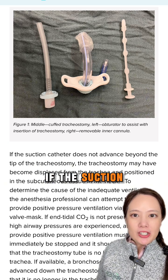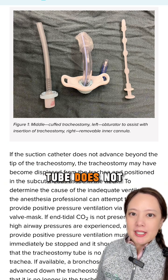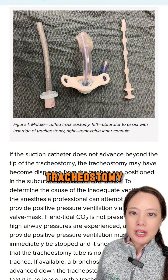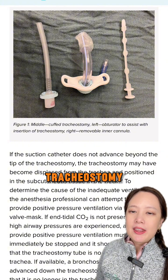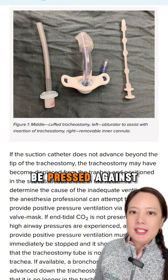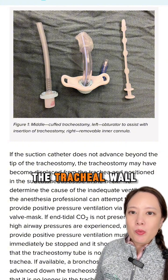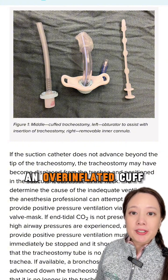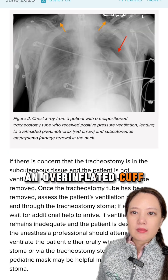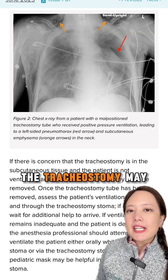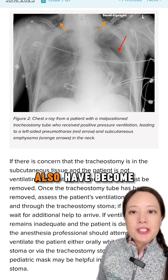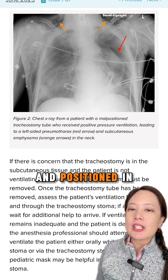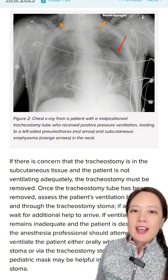If the suction catheter does not advance beyond the end of the tracheostomy, the tip may be pressed against the tracheal wall or occluded by an overinflated cuff. The tracheostomy may also have become displaced and positioned in the subcutaneous tissue.